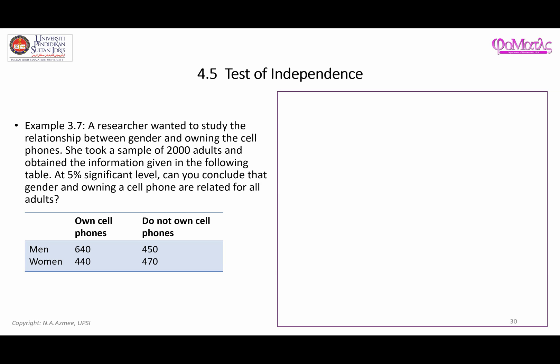In this video I'm going to present another example related to the test of independence. A researcher wanted to study the relationship between gender and owning a cell phone. She took a sample of 2,000 adults and obtained the information in a two-by-two contingency table. At five percent significance level, can we conclude that gender and owning a cell phone are related for all adults?